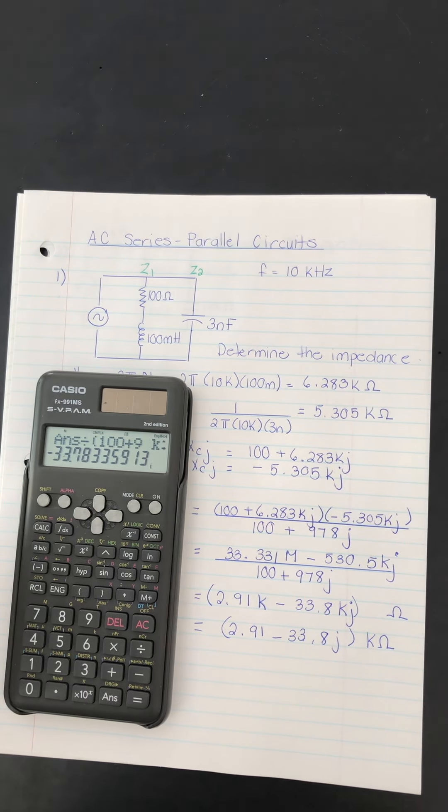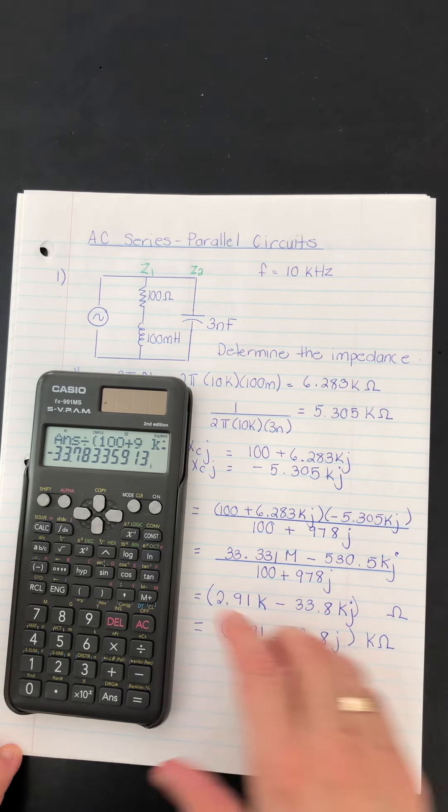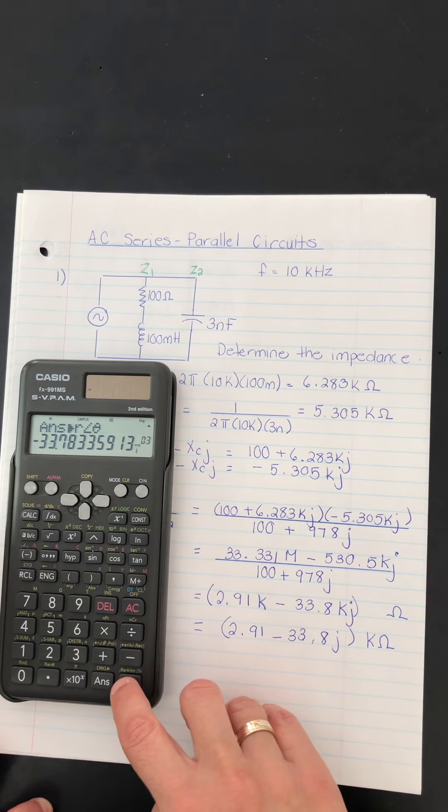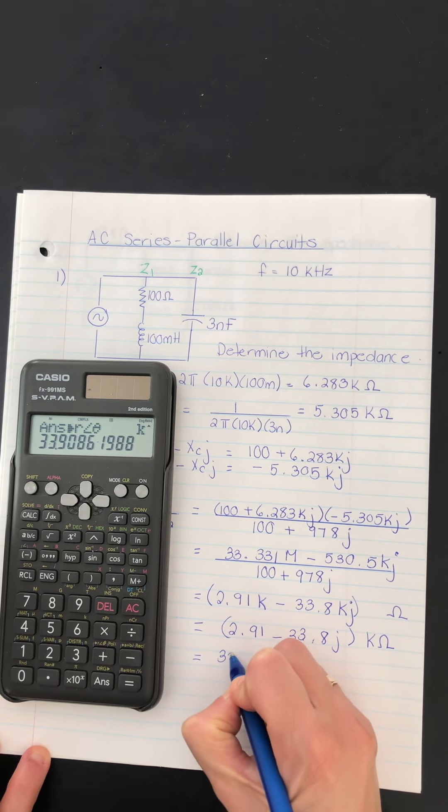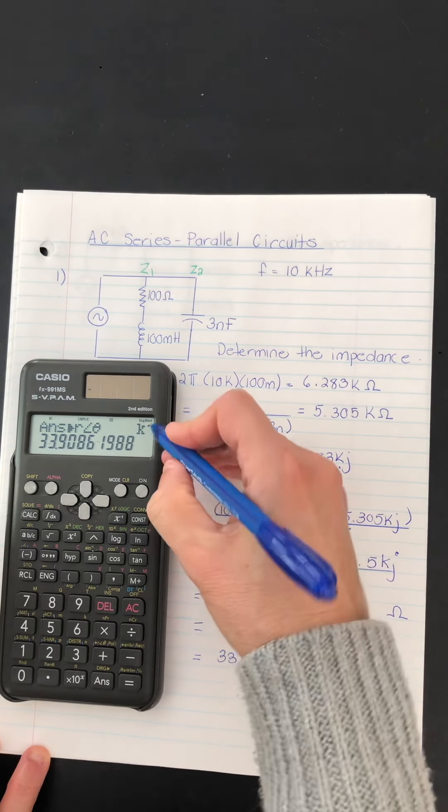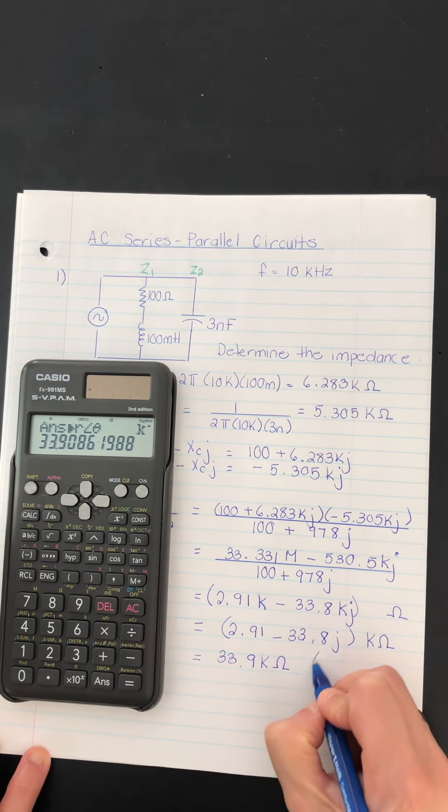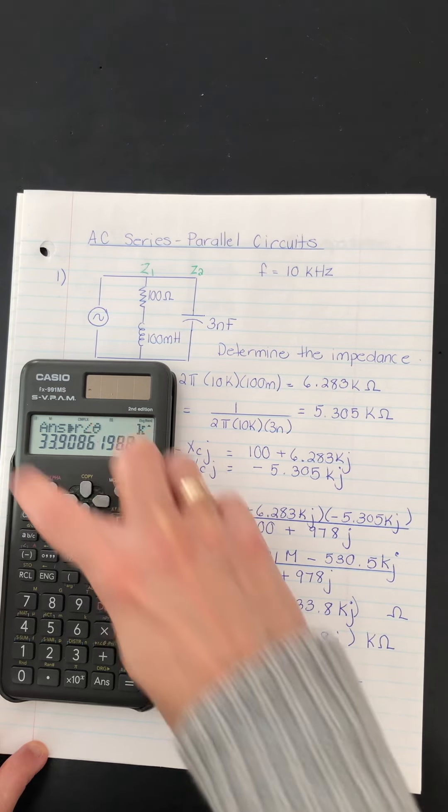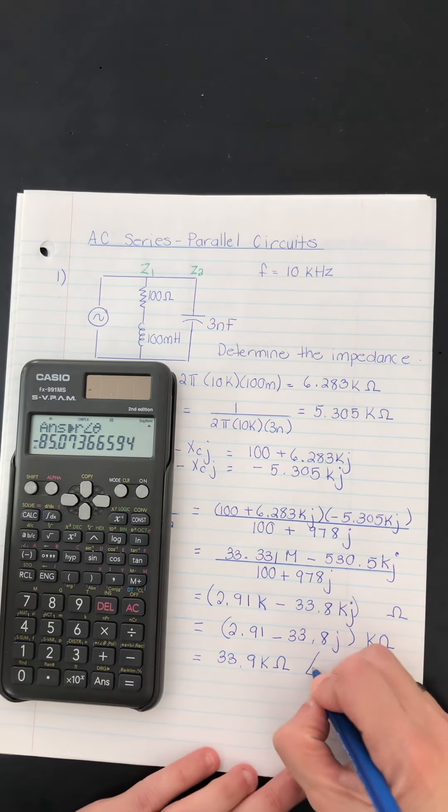Now, if you wanted it in polar form, I think we remember how to do that as well. I think we could just do shift plus. Should we give it a try? Shift plus equals. So that would be 33.9 kilo. Here's where we'd put the ohms. And then you could get ready for the angle. And it's shift equals. And there's the angle. Negative 85.1 degrees.